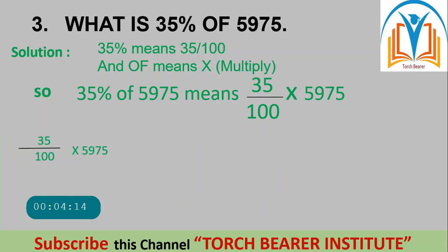So 35% of 5,975 means 35 divided by 100, multiplied by 5,975.